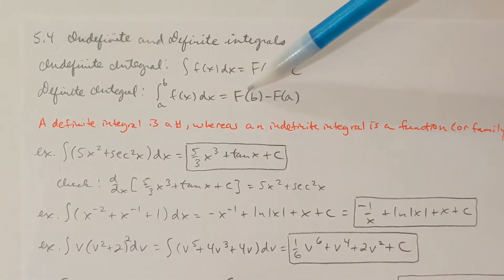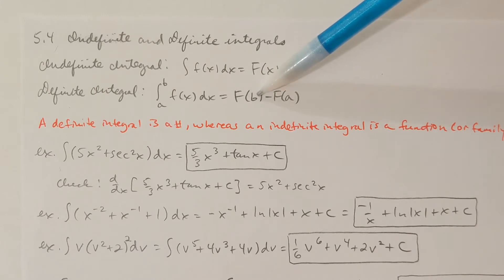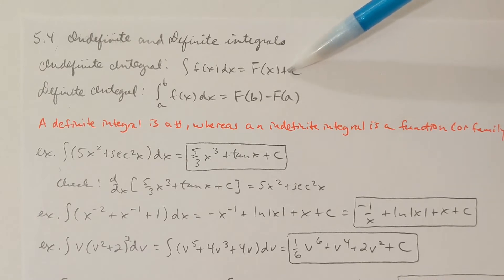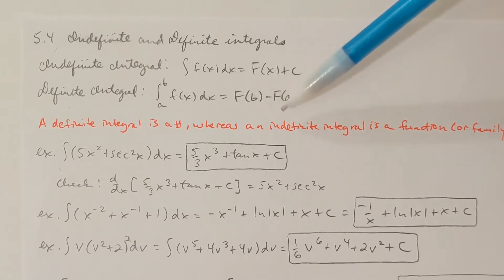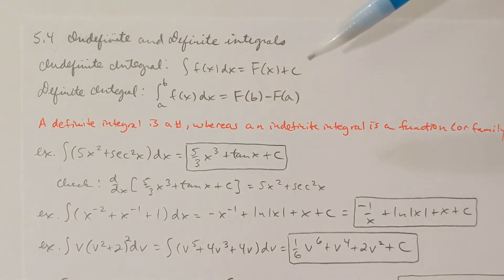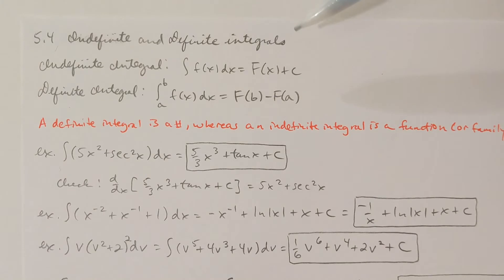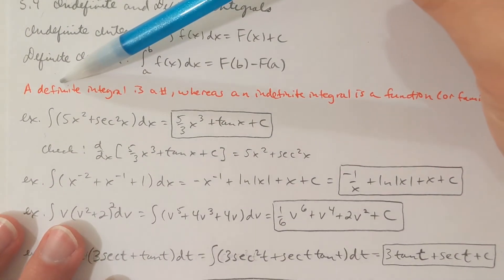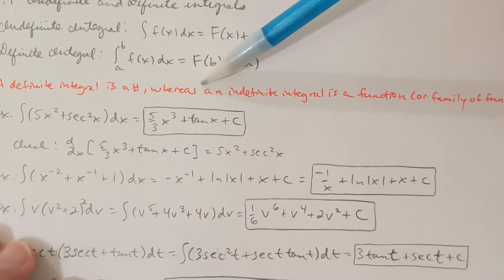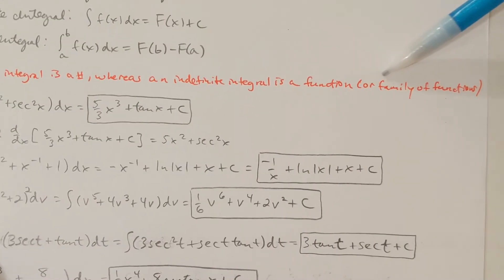We take the antiderivative of the upper bound minus the antiderivative of the lower bound. Notice how we don't have any plus c with a definite integral because the constants will cancel — we simply go to the number when we plug in our a and b values in the antiderivative. A definite integral is a number, whereas an indefinite integral is a function or a family of functions.